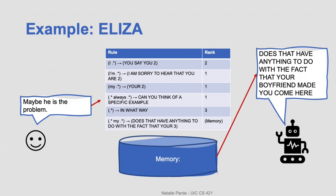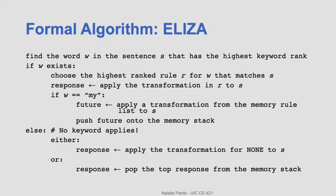We've now worked through an entire ELIZA case example, and we can look at the formal algorithm behind the process. First, find the keyword-based patterns that match your input and choose the highest-ranked keyword. Assuming a keyword exists, select the highest-ranked transformation rule and apply it. You may also have rules that indicate when to store facts on your stack — if so, perform that operation. If no keywords match, either produce the default output or pop the top fact from your memory stack and use that instead.